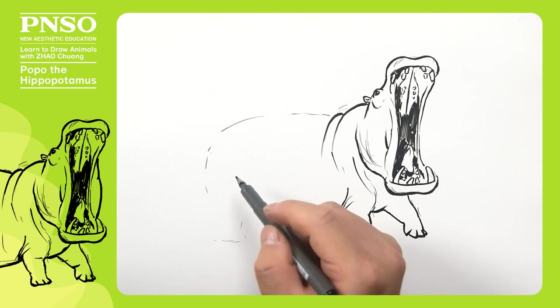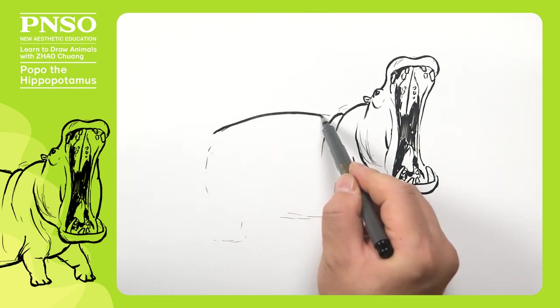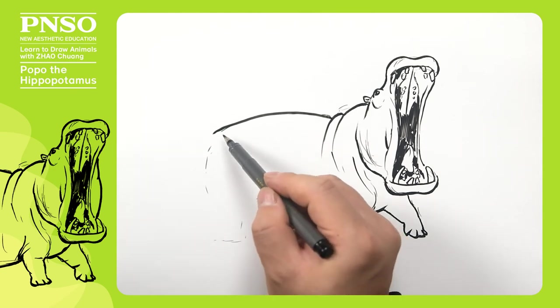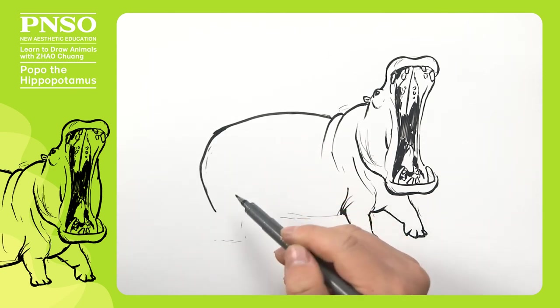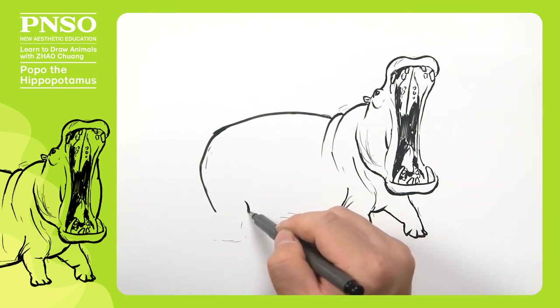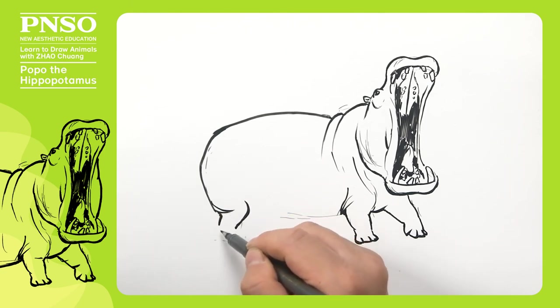Now let's draw its strong back. Round hips. Knee. Short hind leg. Foot and sole. We draw its sole tilting up as the hippopotamus walks on tiptoeing.